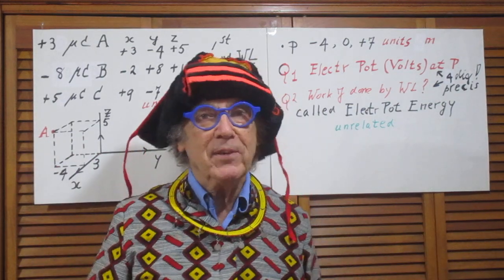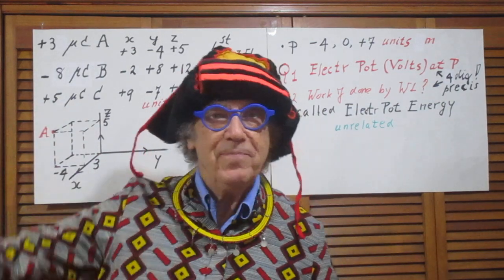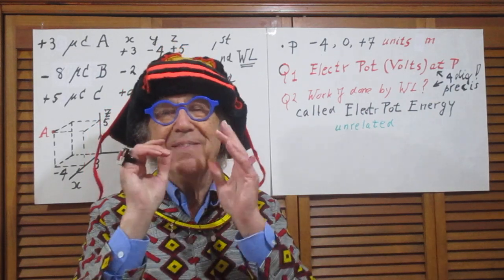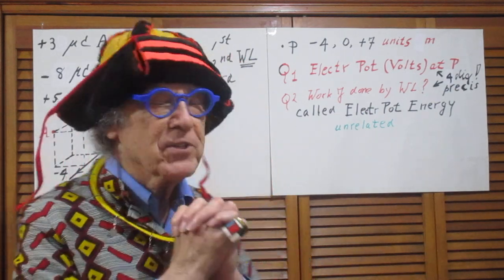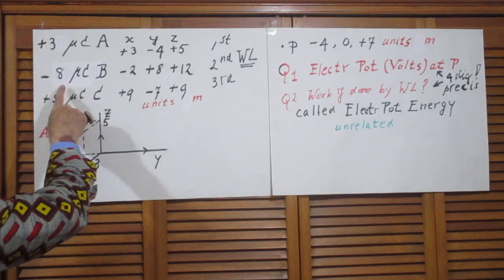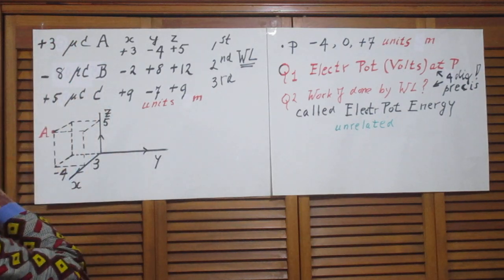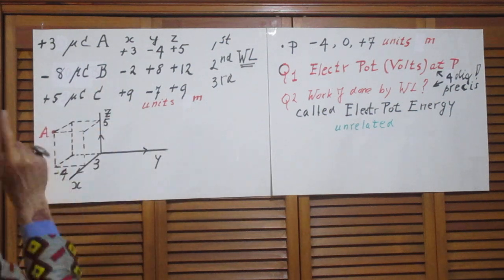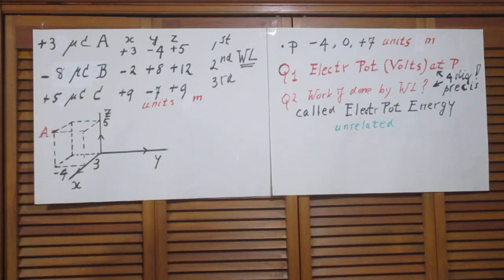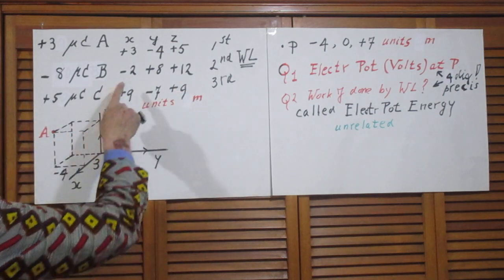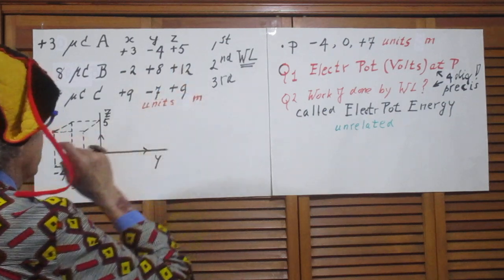I leave this space and go again a few kilometers away. Now I bring another charge in: a charge of minus eight microcoulombs, and I put that at location B in my reference frame. The coordinates of B are minus two, plus eight, plus twelve.